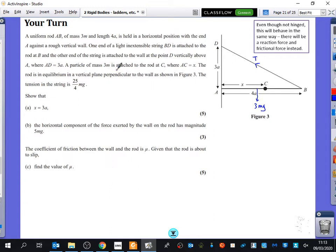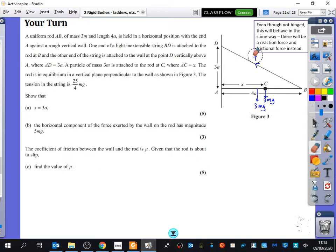A particle of mass 3M is attached to the rod at C. So we've got two particles that are now 3MG, and that distance away is X. The rod is in equilibrium in a vertical plane perpendicular to the wall. The tension in the string is 25 over 4MG. So I'm going to write it as 25 over 4MG.